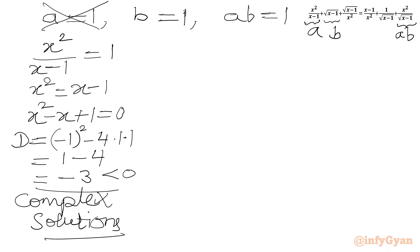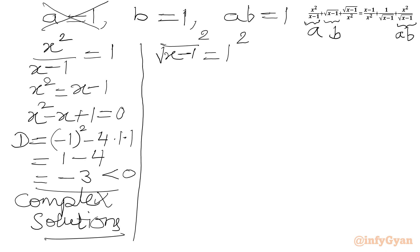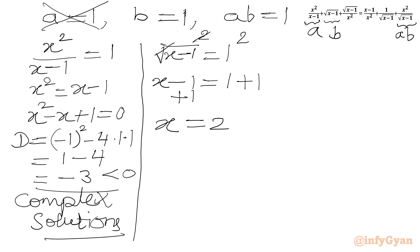Now solving b = 1: √(x−1) = 1. Squaring both sides, the square root cancels and we get x − 1 = 1. Adding 1 to both sides, we get x = 2.